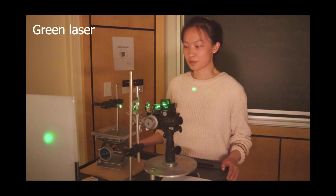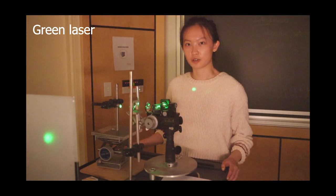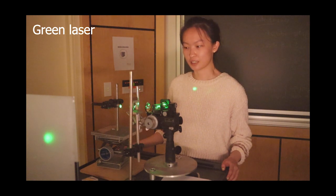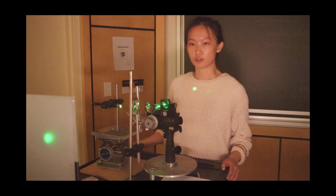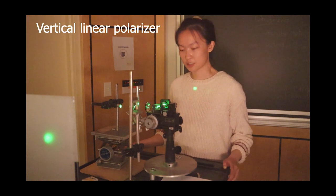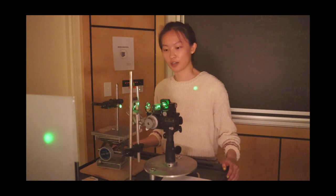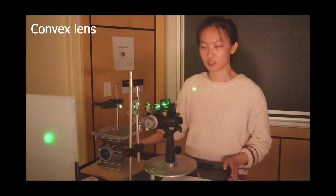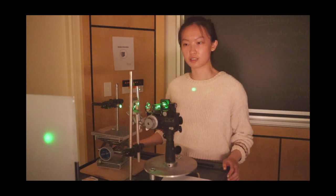We're using a green laser because it gives us a coherent light source and it is also one wavelength. First we're going to pass the laser through a vertical polarizer. Next, we're going to pass it through a convex lens to spread out the light to make it easier to see on the screen.